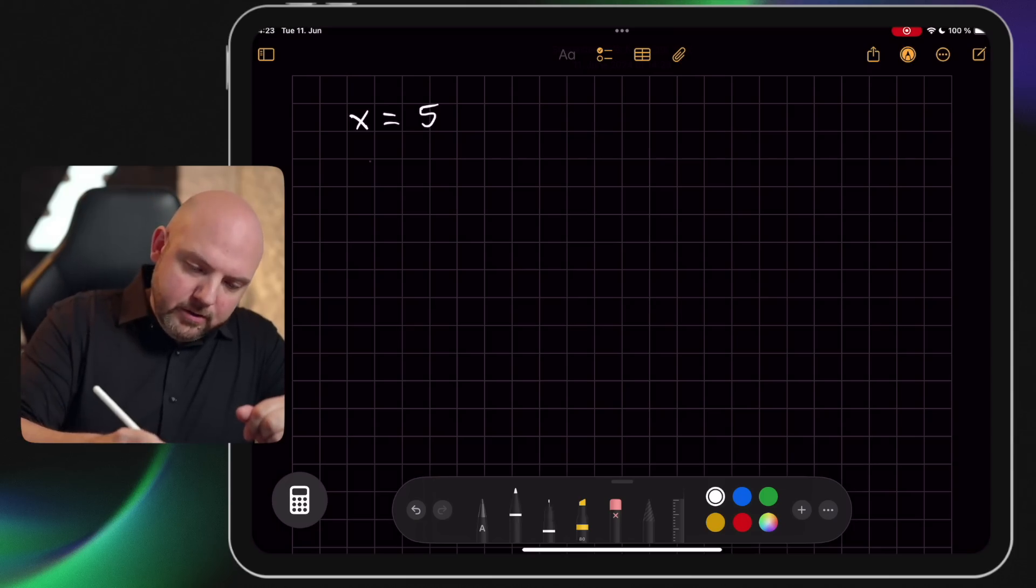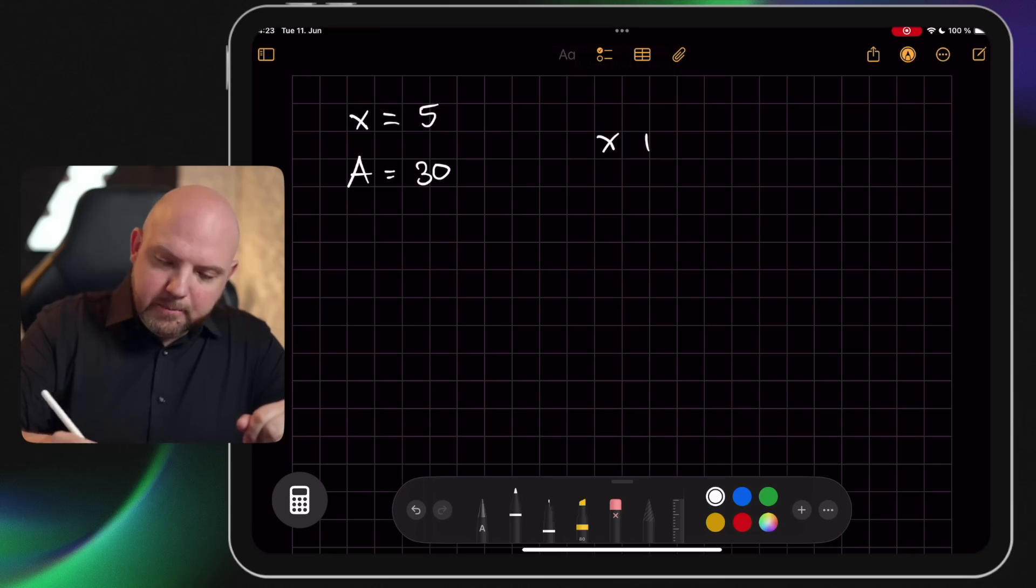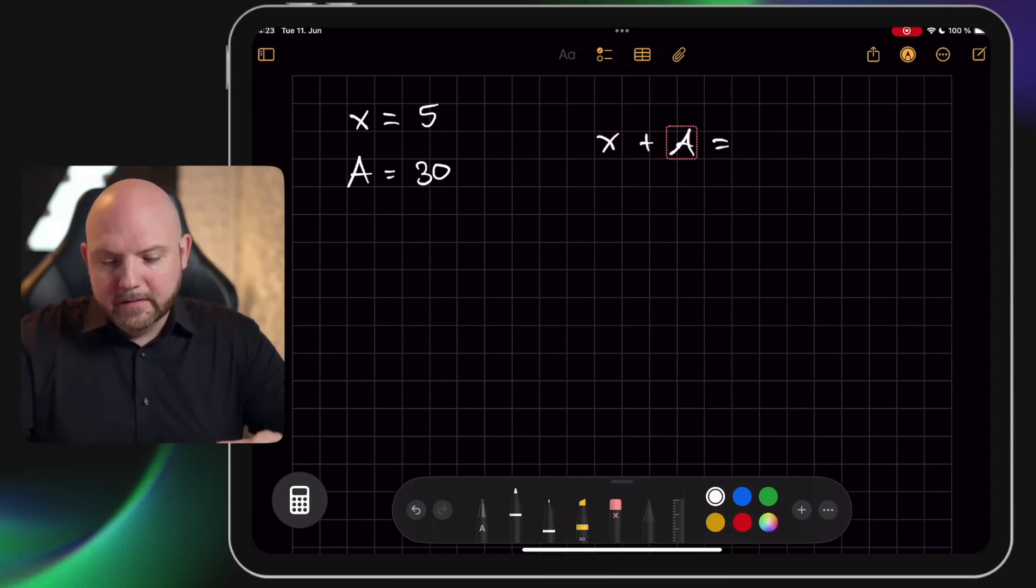Right, so if I do now A equals 30, it will do the same for A. So now if I say X plus A equals, it should take these two variables and make the calculation out of it.